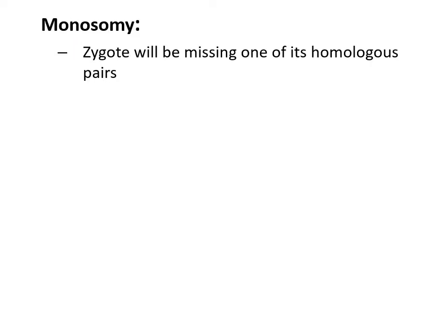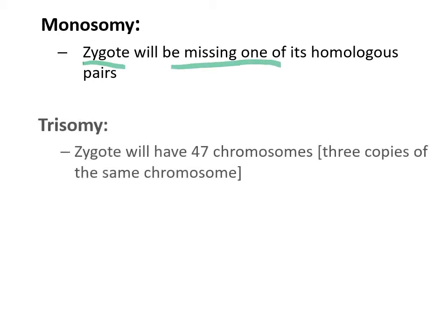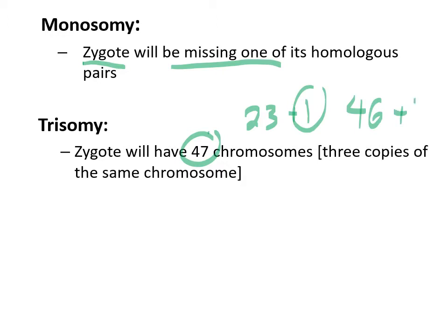Monosomy is when the zygote has too few chromosomes — they're missing one. Trisomy is where they have an extra one, so instead of having a total of 46 (the 23 pairs), they've got one extra half of the homologous pair — ending up with 46 plus that one extra chromosome inherited for one of the particular chromosomes.